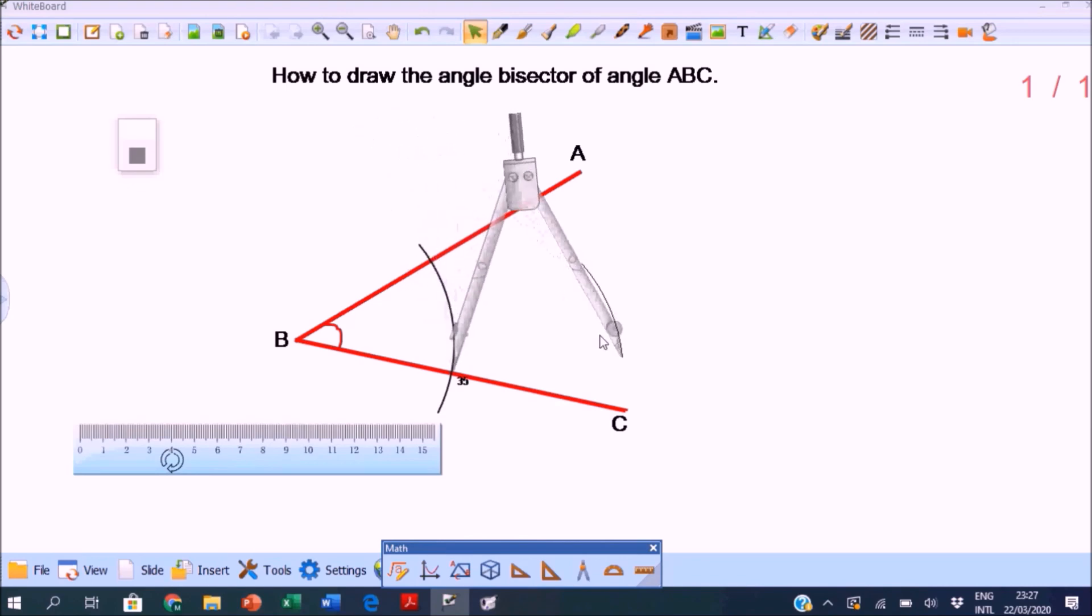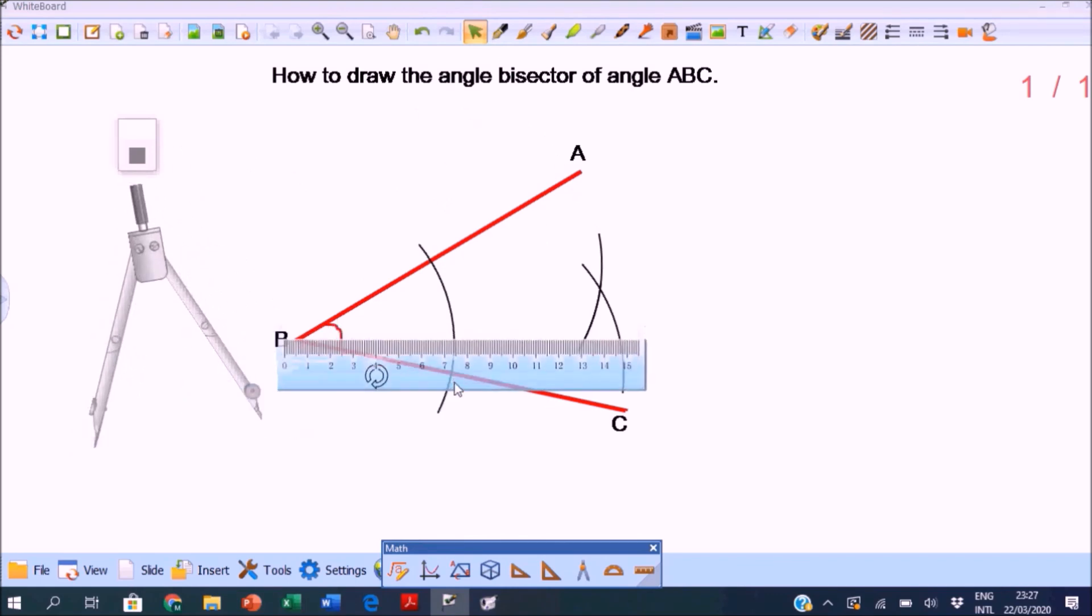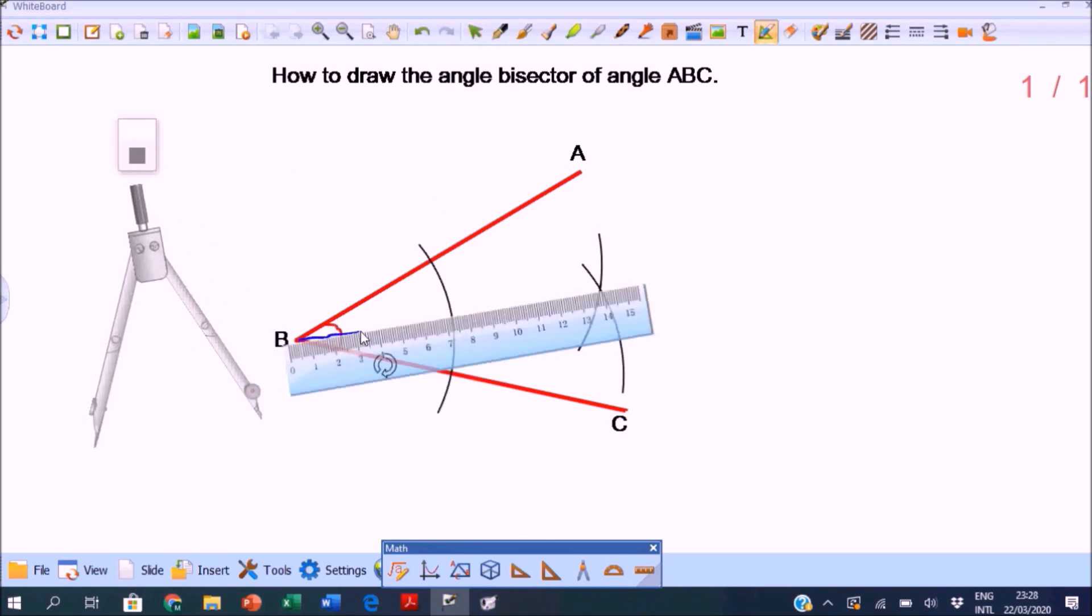Now draw an arc in the middle of the angle. Keeping the same radius, move the compass point to where the arc crosses BA and draw another arc in the middle of the angle intersecting the first arc.